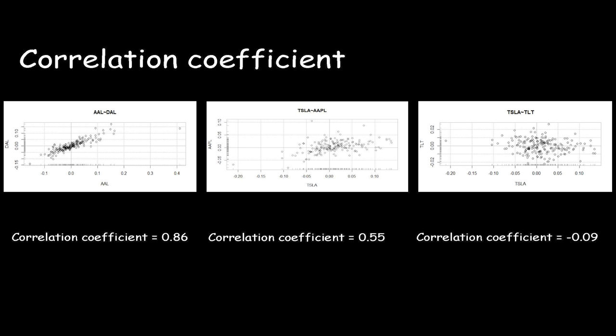The second example is two technology companies, Tesla and Apple. Even if their businesses are not very similar, but they are all technology stocks. Sometimes they increase, they decrease, and fluctuate at the same time. From the plot, we can also roughly see a positive relationship trend. So their correlation coefficient is not very strong, but it still has 0.55.